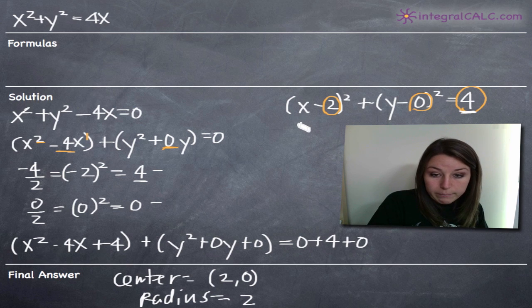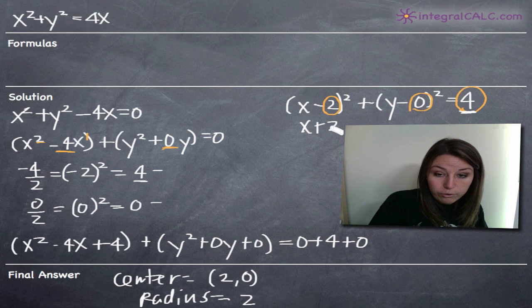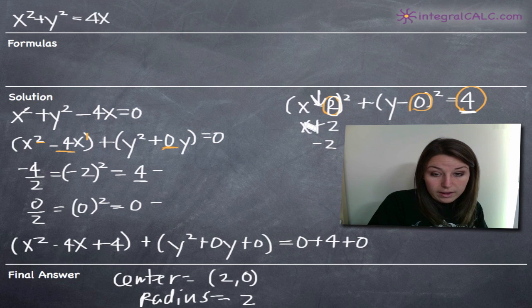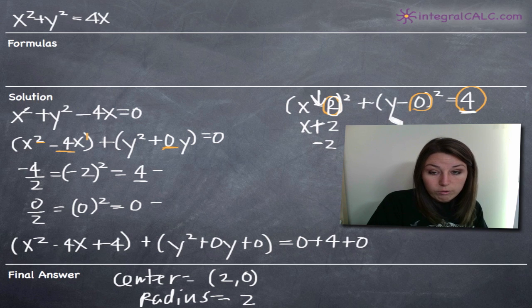Keep in mind that if you had, for example, x plus 2 inside of this term right here, your x coordinate of the center point would be a negative 2 as opposed to a positive 2, because you're always looking for this minus sign. If there's a minus sign, you can just take the number itself. If there's a plus sign, then you have to put a negative in front of your coordinate because normally the formula just has a negative. So in our case, positive 2, 0.